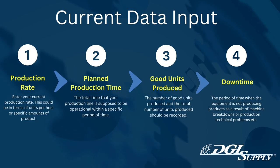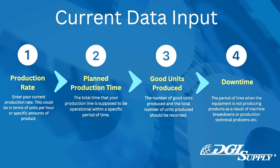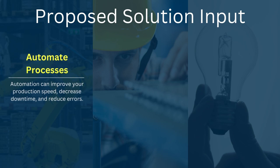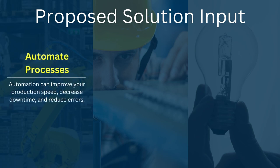Next, input your proposed solutions to improve your OEE score. Automate Processes. Automation can improve your production speed, decrease downtime, and reduce errors.